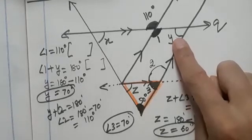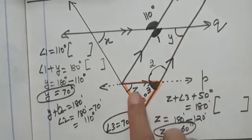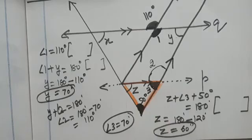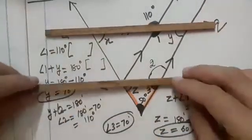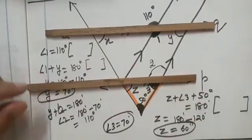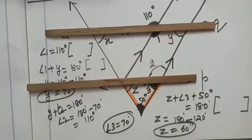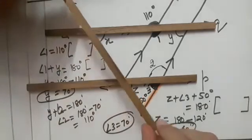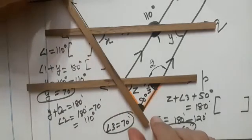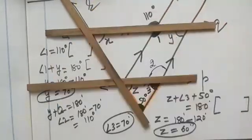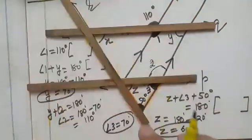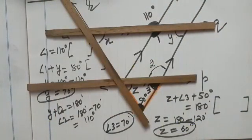You have found Y. Y is 70 degrees. Z is 60 degrees. Now finally, we need to find the value of X. Observe these two parallel lines, P and Q. And now I am taking this line as transversal. We can name this R. This is the transversal.